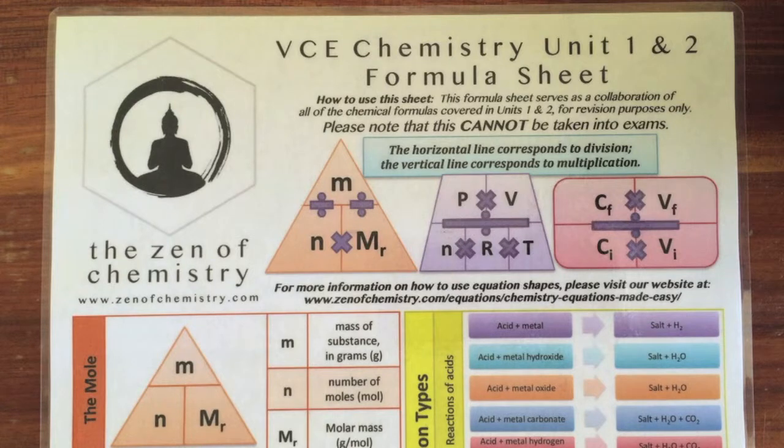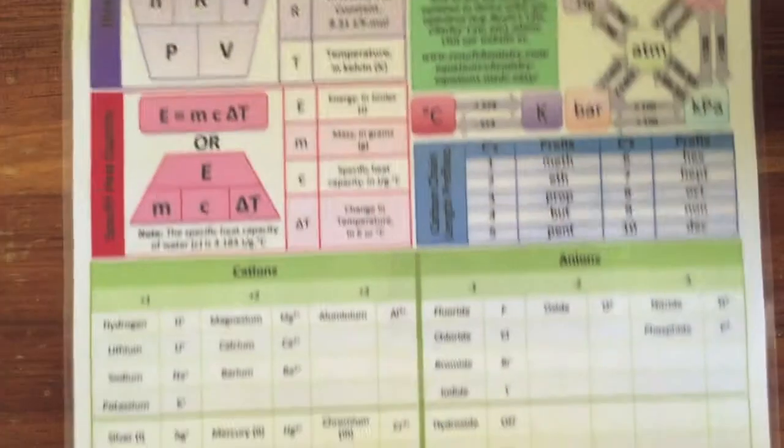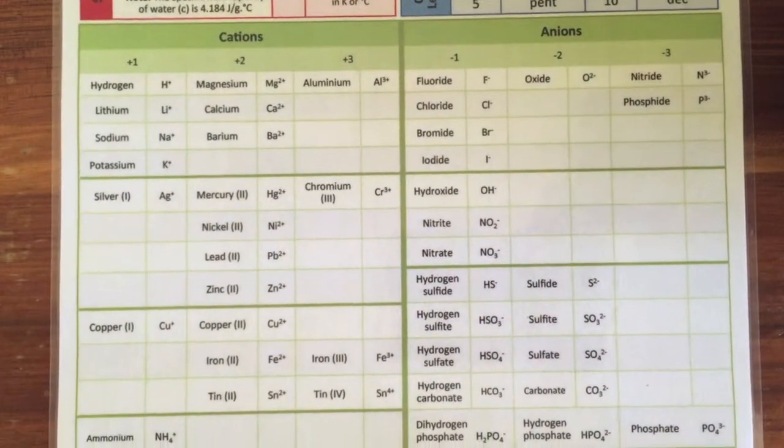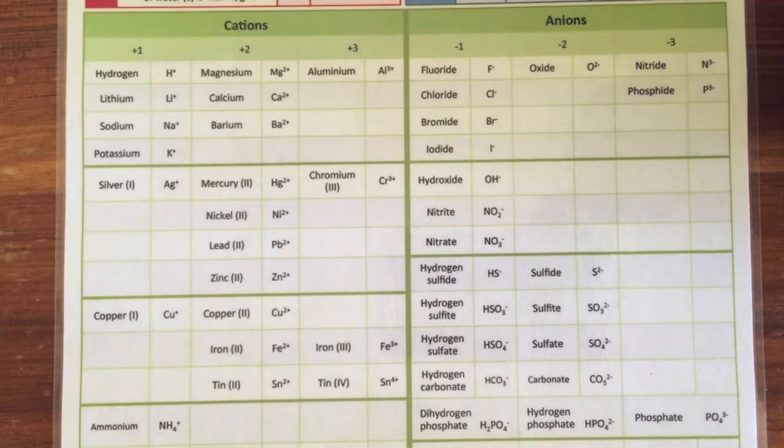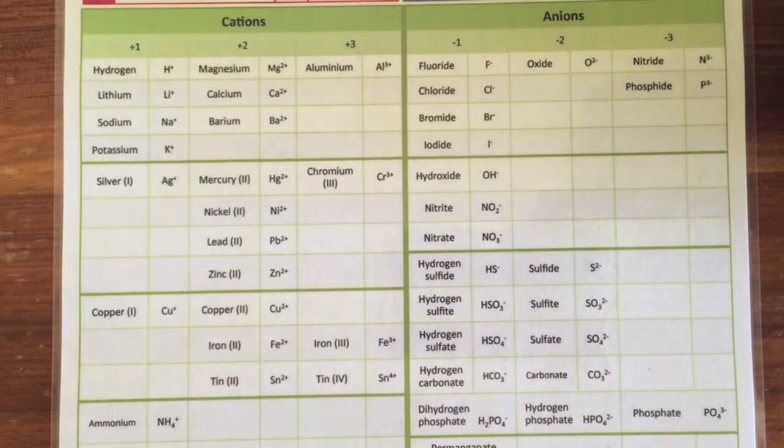I want to go through one of the features of our VCE chemistry unit 1 and 2 formula sheet - the cations and anions table on the back. You can see here that it's set up similar but different to other tables you might have in your textbooks.